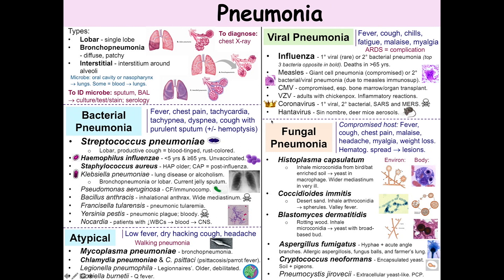On to fungal pneumonia. Fungal pneumonia occurs in compromised hosts and often presents with fever, cough, chest pain, malaise, headache, myalgia, and weight loss. Remember that in particular with the systemic fungi, you can have hematogenous spread causing lesions in other parts of the body.